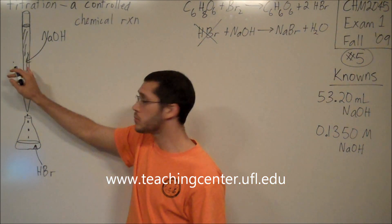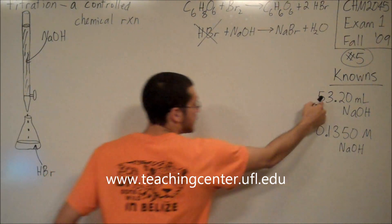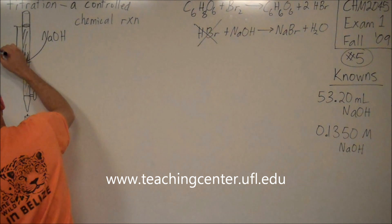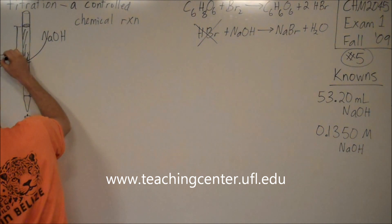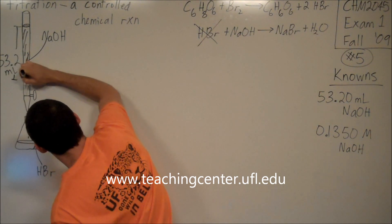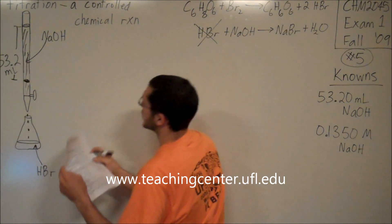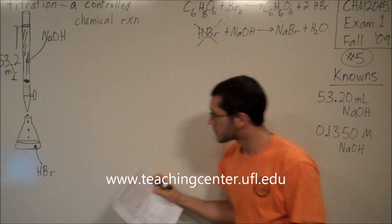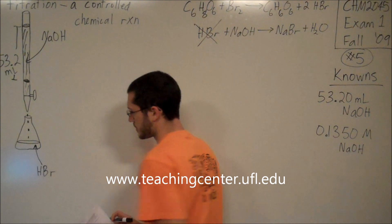Don't add any more sodium hydroxide. 53.20 mL was sufficient. So it took 53.20 mL, and then I used all this up. That's the volume of NaOH that I used up. And then it turns pink. So that's what a titration is. It's a controlled chemical reaction.